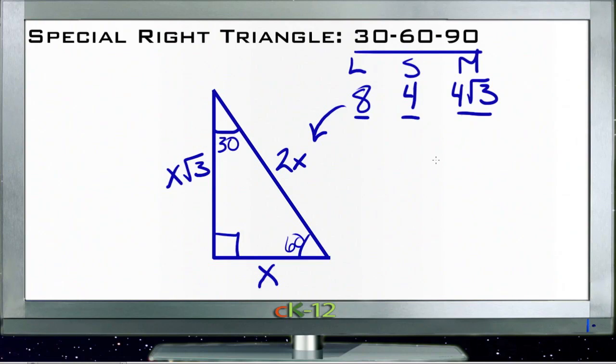If, for instance, we know the short side, let's say the short side is 6 units long. Well, then the long side is just twice that, it's 12, and the medium side would be 6√3.